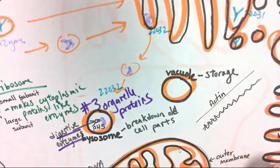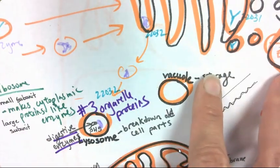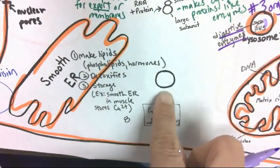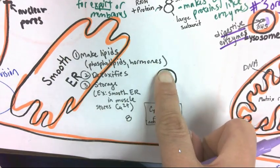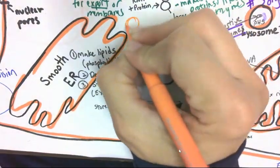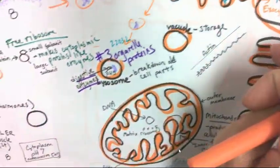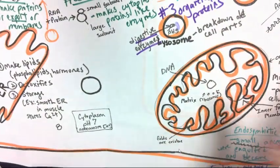So all of these organelles are working together to move proteins around. Let's say the rough ER, the Golgi, or the cell membrane need more phospholipids. Well, the smooth ER helps detoxify things. It also can store things, but most importantly, it makes lipids, phospholipids, and hormones. So the smooth ER can bud off empty vesicles of phospholipids and transfer them all around the cell to the rough ER, to the Golgi, to the cell membrane, wherever phospholipids are needed. So all these organelles are working together to move things around the cell.